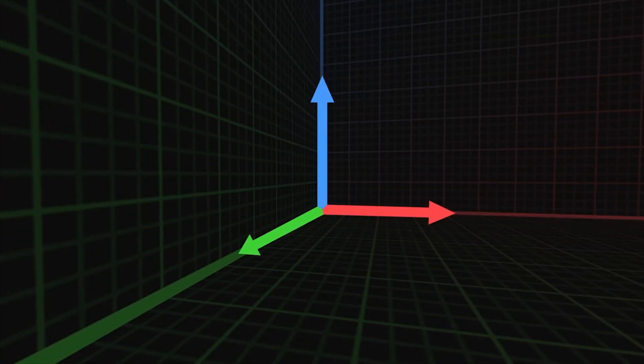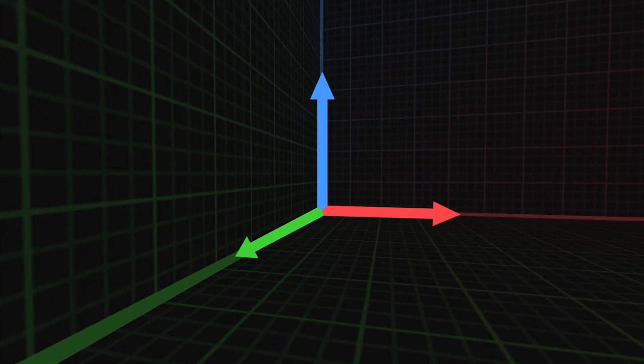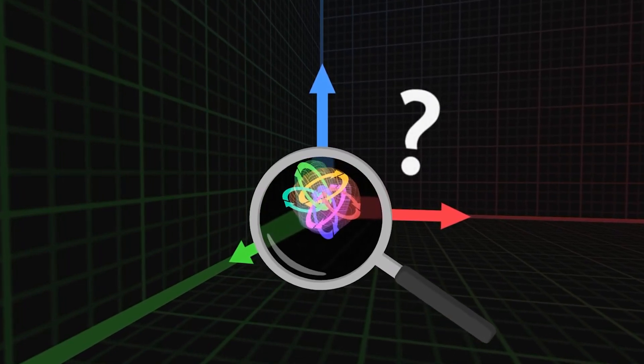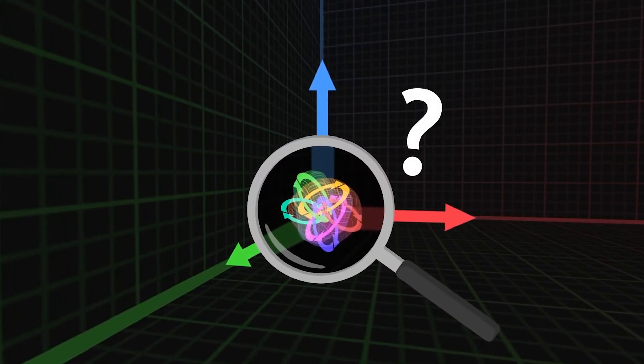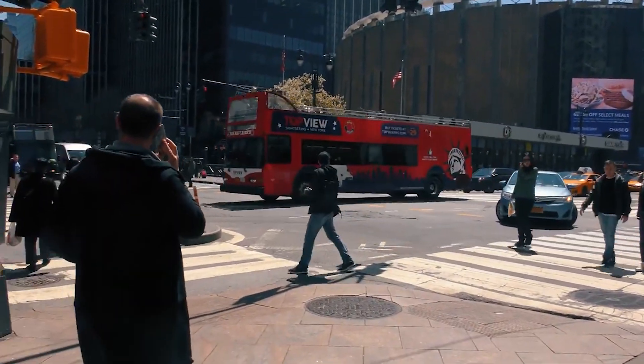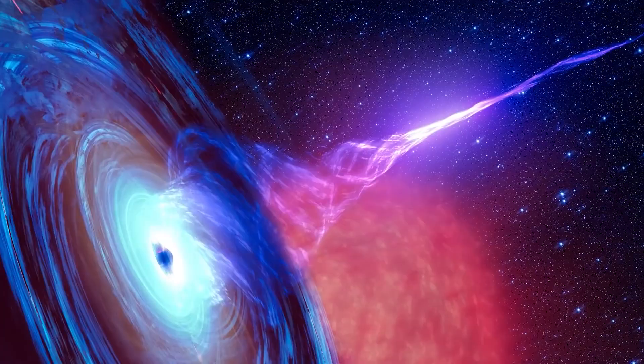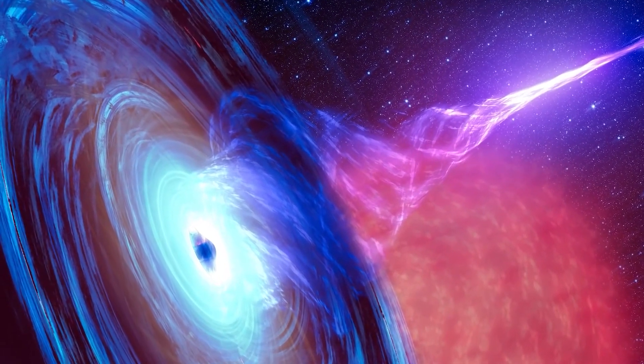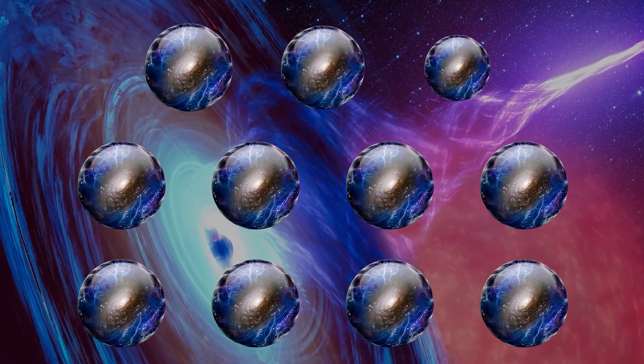String theory proposes that there are more spatial dimensions than the three we observe. These extra dimensions are often compacted or curled up at extremely small scales, rendering them unnoticeable in our daily lives. The number of extra dimensions necessary in string theory varies depending on the version, with some requiring up to 11 dimensions.